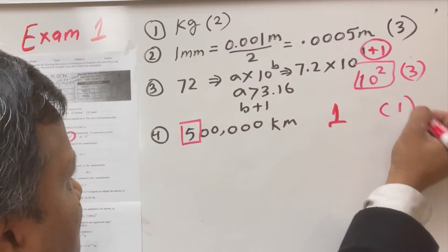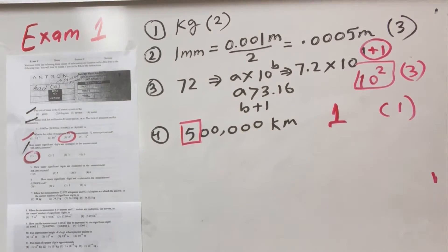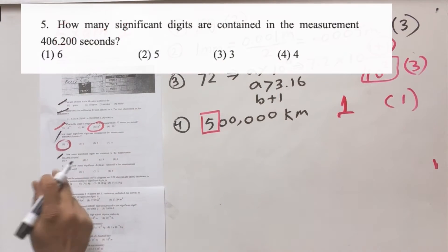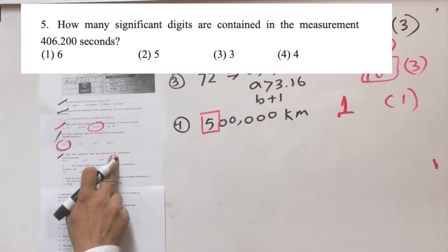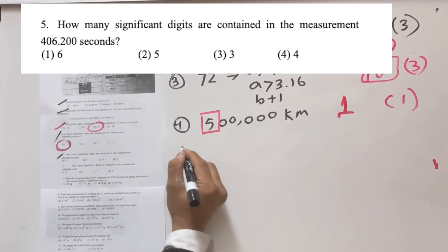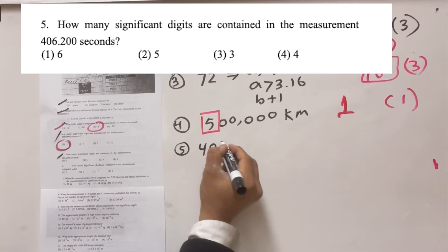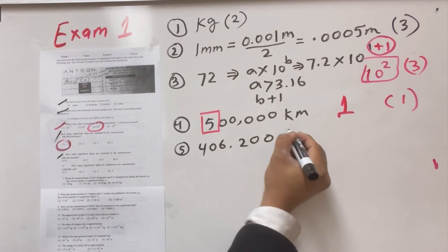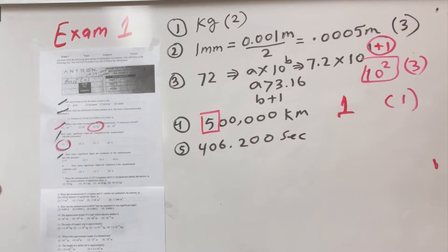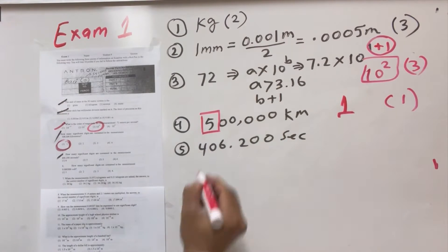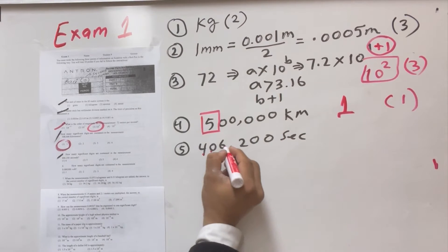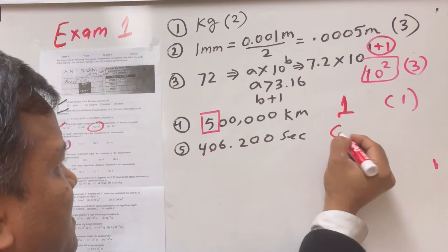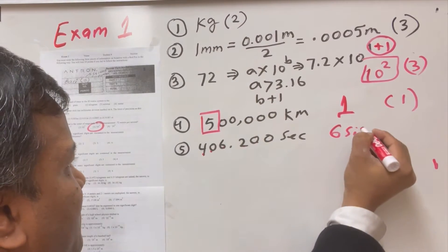Number five: how many significant figures are in the measurement 406.200 seconds? Let's count: 4, 0, 6, 2, 0, 0 — that's six significant figures. That would be option number one.